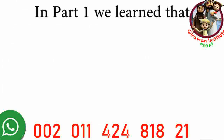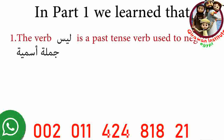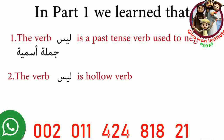In part one we learned that the verb leysa is a past tense verb that's used to negate a jumla ismiya. A jumla ismiya is a sentence that begins with a name or a noun. We also learned that leysa is a hollow verb, and we learned how to conjugate leysa.